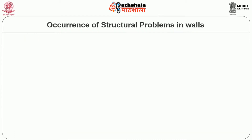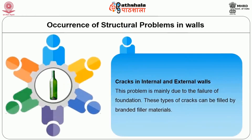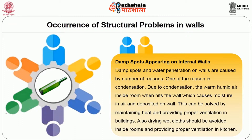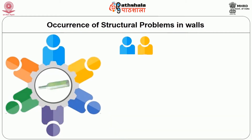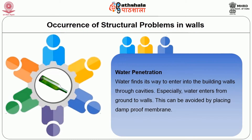Next, we will see the occurrence of structural problems in walls. Cracks in internal and external walls are mainly due to failure of foundation; these types of cracks can be filled with branded filler materials. Damp spots appearing on internal walls are caused by a number of reasons, one of which is condensation — the warm humid air inside a room heats the wall, causing moisture to deposit on the wall. This can be solved by maintaining heat and providing proper ventilation in buildings, avoiding drying wet clothes inside rooms, and providing proper ventilation in the kitchen. Water penetration occurs as water finds its way into building walls through cavities, especially from the ground, and can be avoided by placing damp-proof membranes.